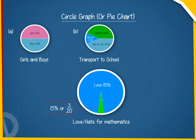15% or 3 by 20 represents hate for mathematics and the remaining 85% or 17 by 20 represents love for mathematics.